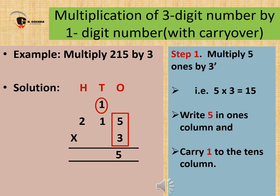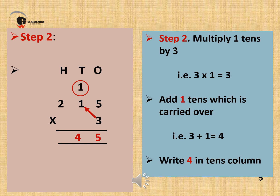We will write down 5 in the ones column and carry 1 ten to the tens column and write it above. After completing step 1, let's move on to step 2. Now we will multiply 1 ten by 3. 1 ten is our multiplicand and 3 is our multiplier. When we multiply 3 by 1, the answer is 3, because anything multiplied by 1 is the number itself. So add 1 ten which is carried over from the first step. That is 3 plus 1 equals 4. So write 4 in the tens column.